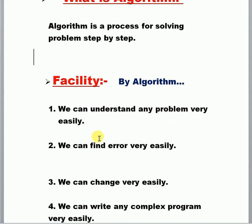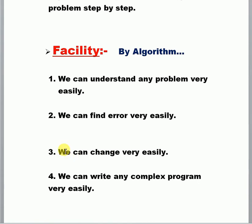First, we can understand any problem very easily. Suppose you have a problem that you cannot understand easily — if you write an algorithm on this problem, then you will understand it very easily. Second, we can find errors very easily. If you write a solution to a problem and you make an error, when you go to check where the error is, you will very easily find where the problem is and what the error is.